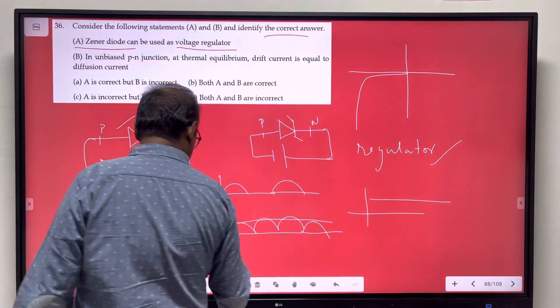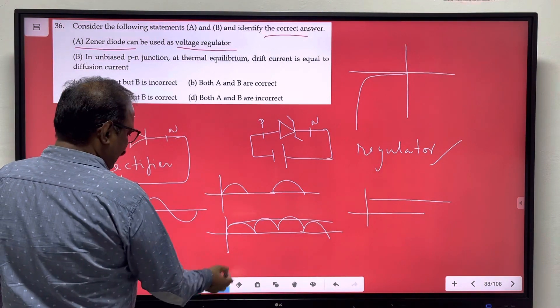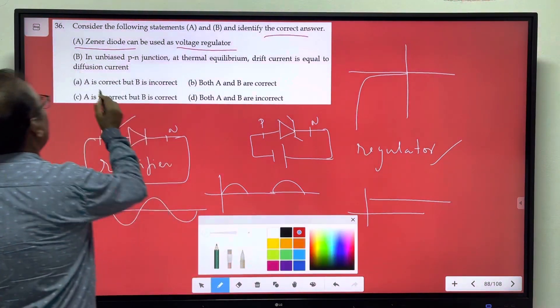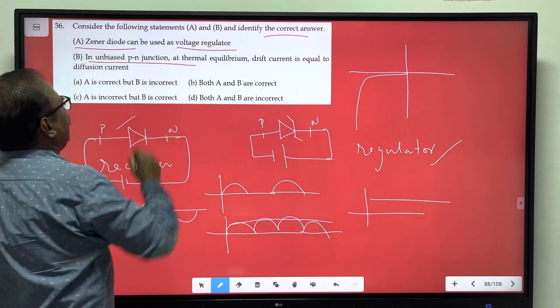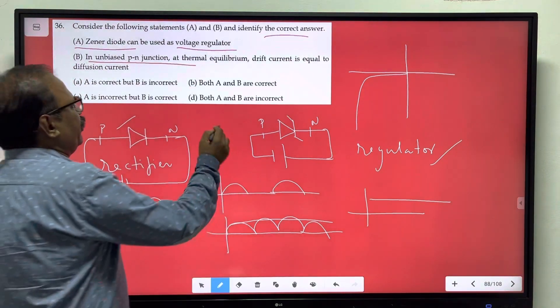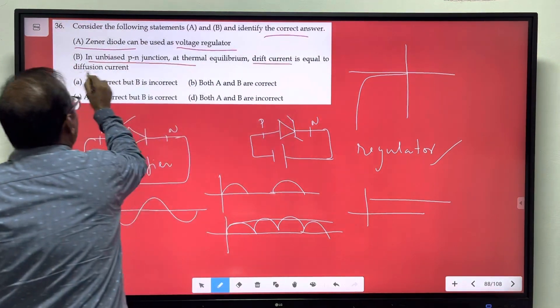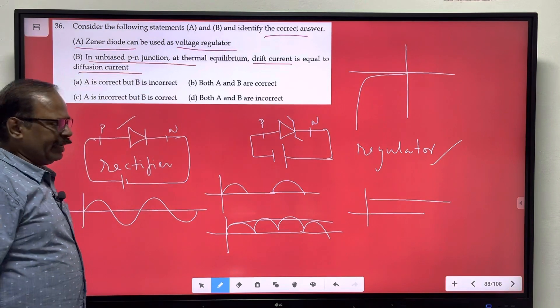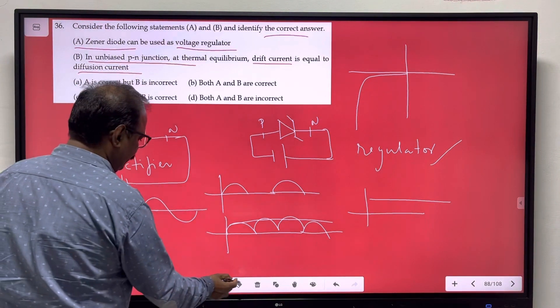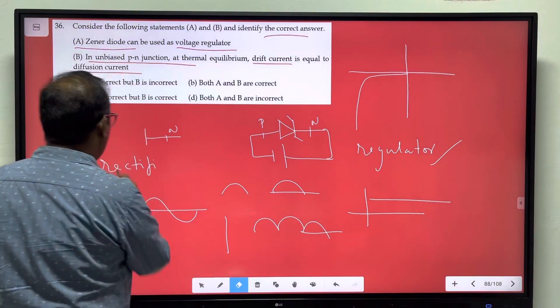Let's look at the second statement: unbiased PN junction at thermal equilibrium, drift current is equal to diffusion current. One concept that we can see.